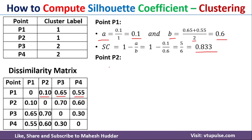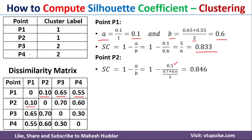Similarly, we can calculate the silhouette coefficient for point P2. The formula is again 1 minus a divided by b. a = 0.1, because the only other point in cluster 1 is P1, and the distance from P2 to P1 is 0.1 divided by 1, giving 0.1. For b, we calculate the average distance from P2 to all points in the other cluster — P3 and P4. The distances are 0.7 and 0.6, so b = 0.7 plus 0.6 divided by 2. Solving the full equation gives a silhouette coefficient of 0.846.